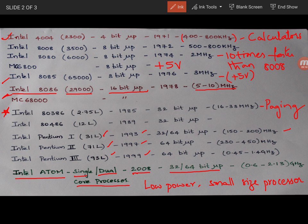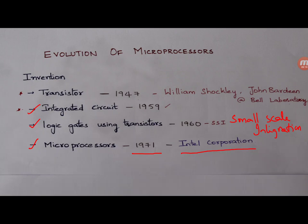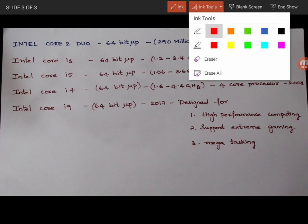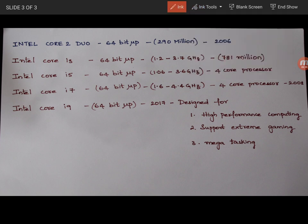And it was widely used in portable netbooks. Then came the Intel Core 2 Duo processor, which is a very popular microprocessor. And it was released in the year 2006. It is a 64 bit microprocessor with 290 million transistors.